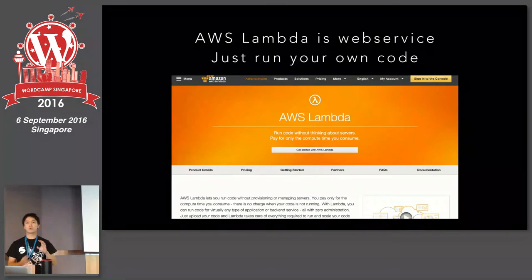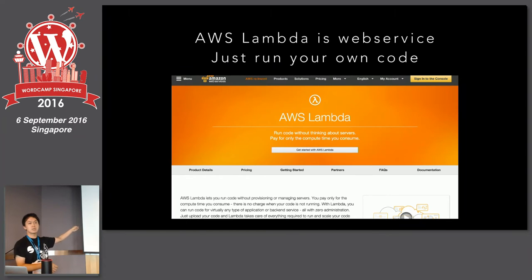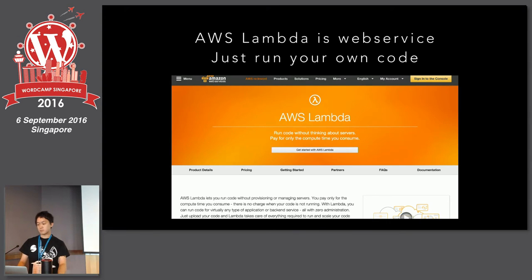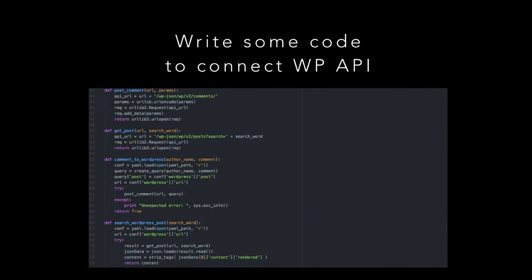AWS Lambda is one of the web services in Amazon Web Services — it just runs your own code. You upload your source code and this service runs the application. You don't need to maintain a web server, and never mind the cost. AmimotoNinja connects to the WP REST API, written in Python. AWS Lambda only runs Node.js, Java, or Python, so you need to run JavaScript, Java, or Python to connect to another application.